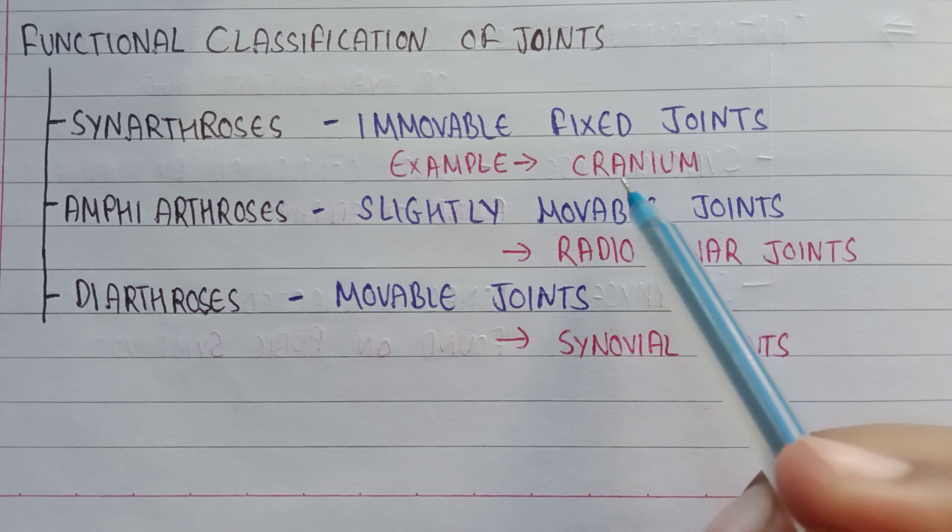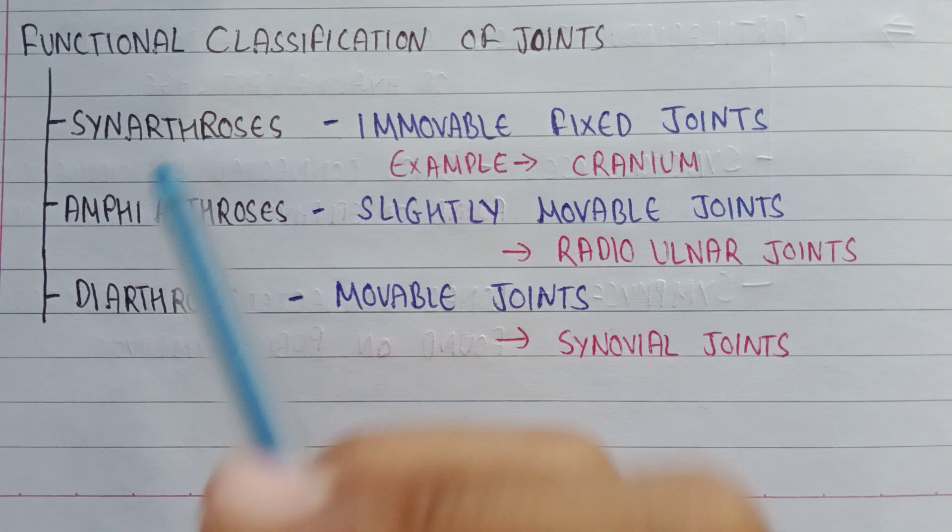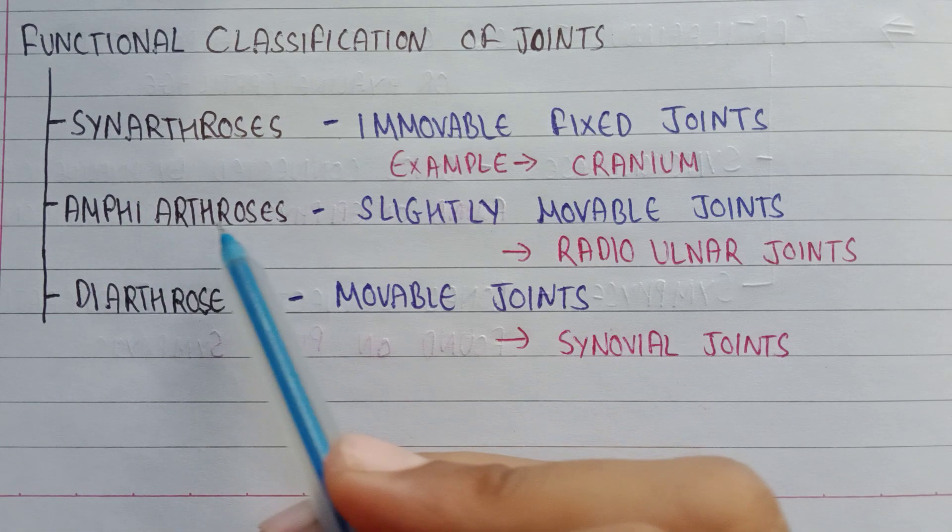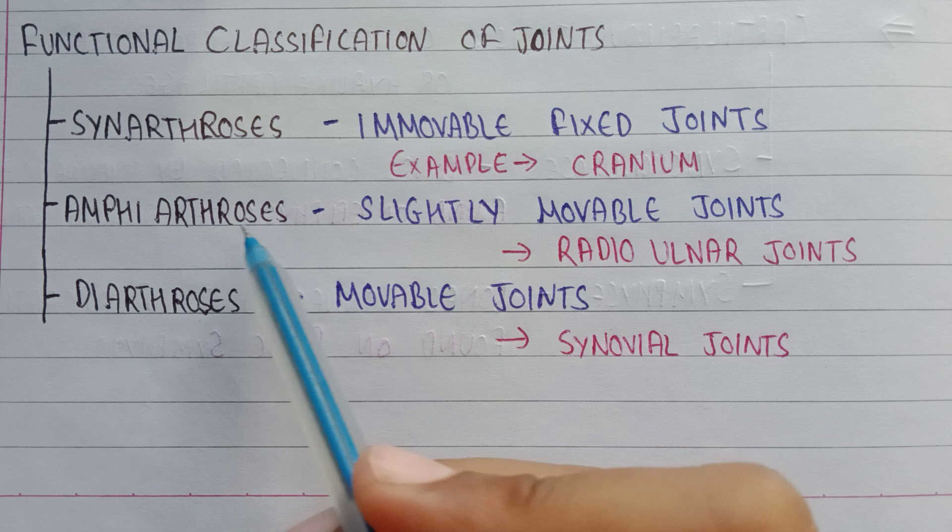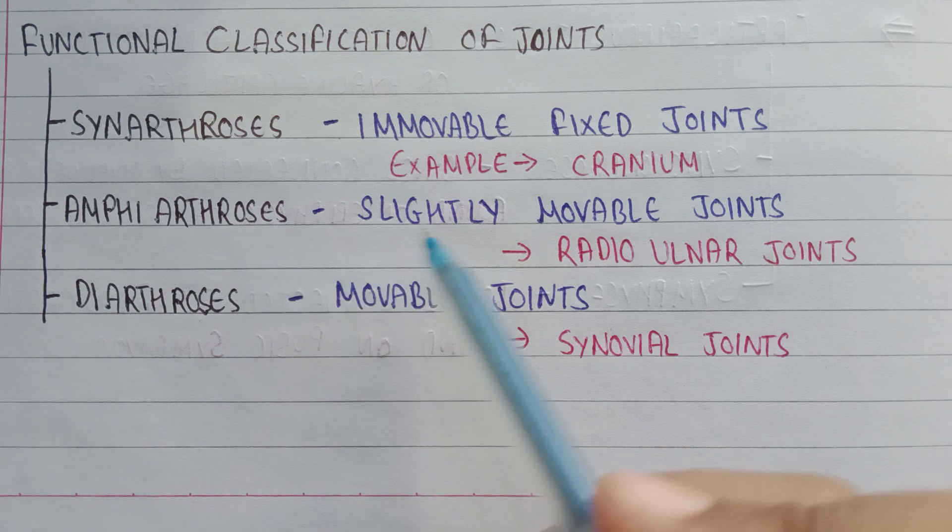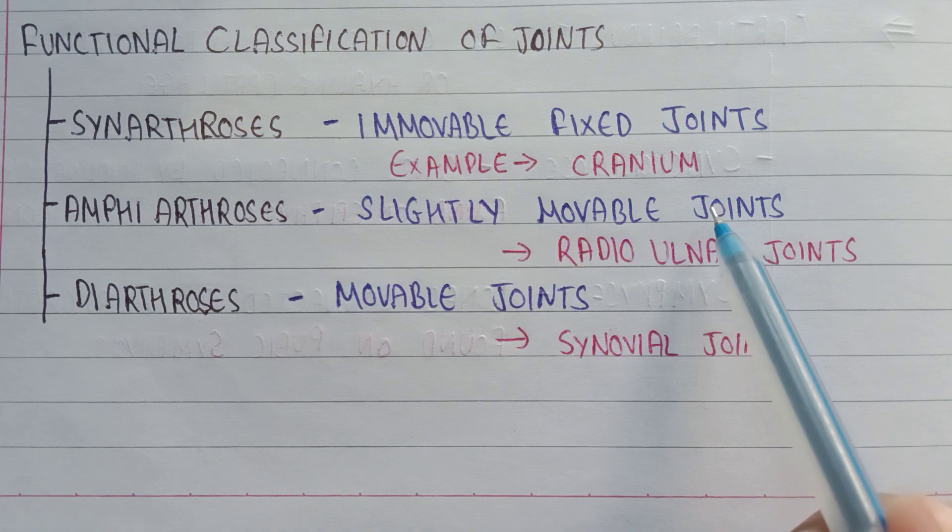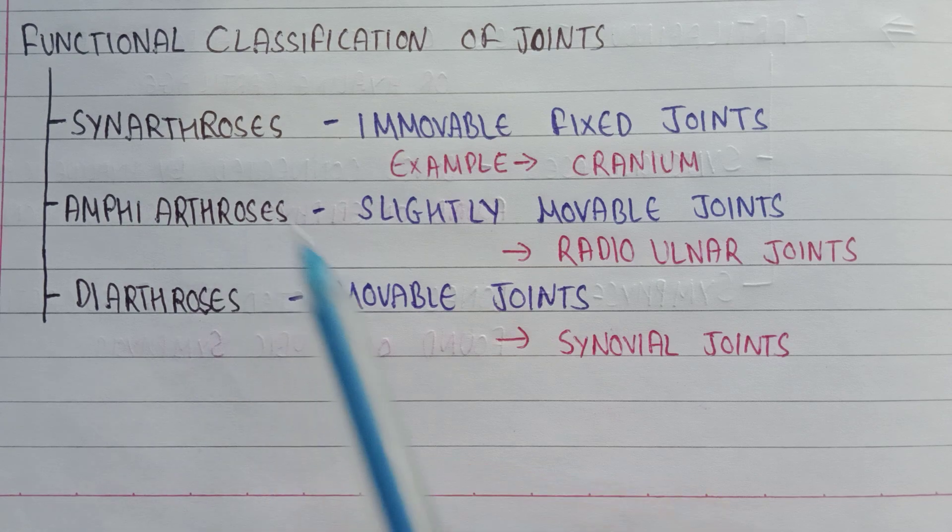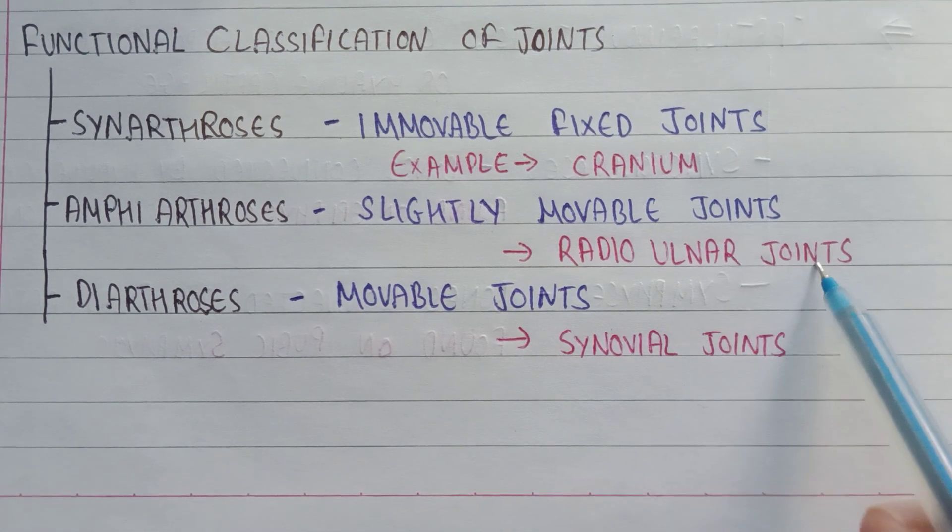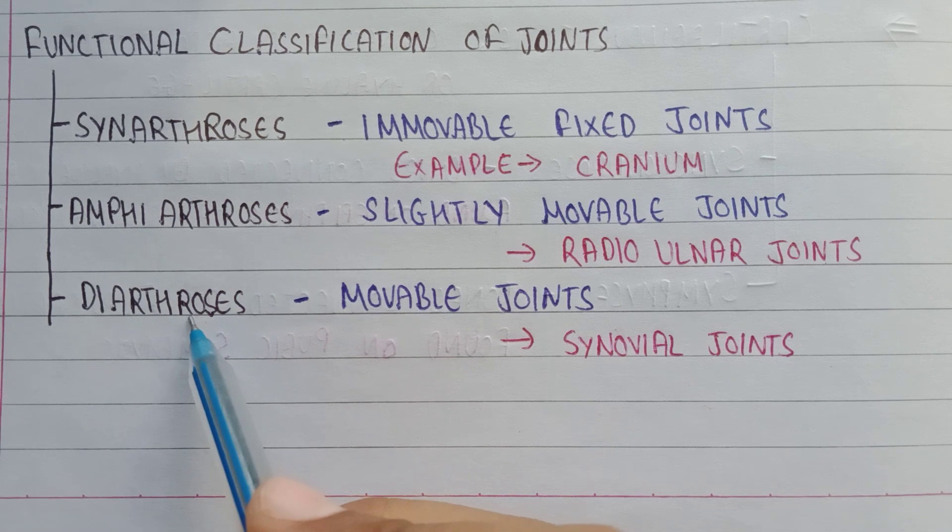Second is amphiarthrosis joint. The amphiarthrosis joints are slightly movable joints. An example of amphiarthrosis is radio ulnar joints. Third is diarthrosis.